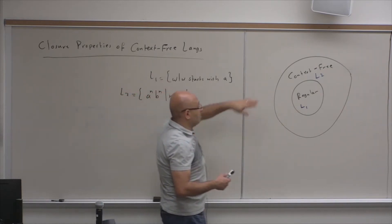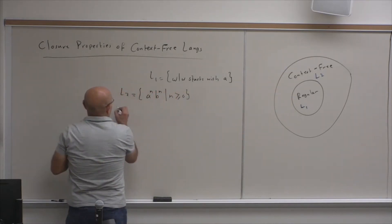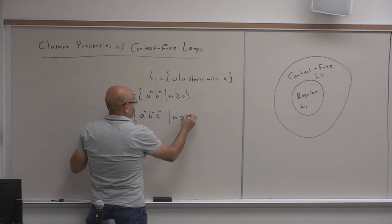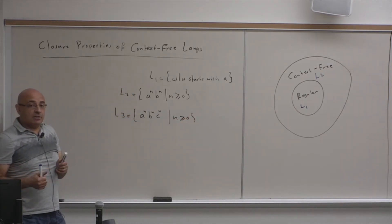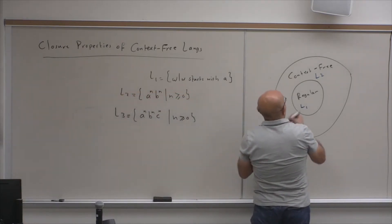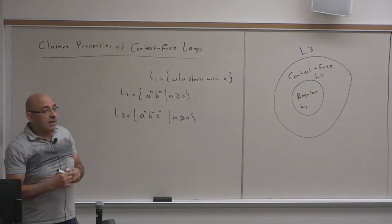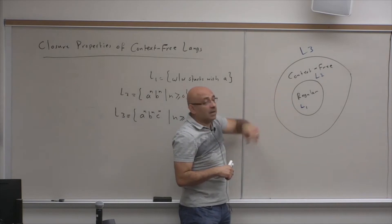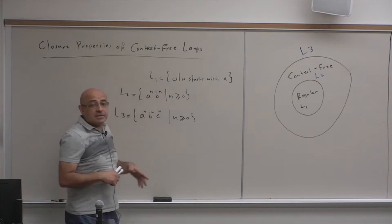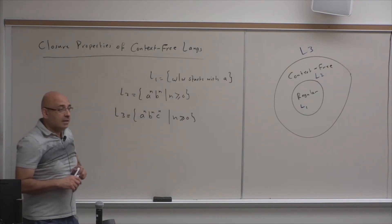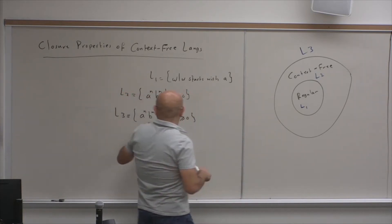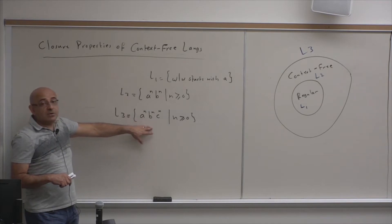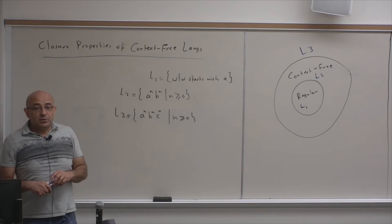Is there a language that cannot be represented using context-free grammars? Yes. There are languages like L3 = {A^N B^N C^N | N ≥ 0} that cannot be represented even using a context-free grammar. L3 is outside the context-free languages. Later on, we will learn a larger set of formal languages that contains context-free languages. There is also a pumping lemma for context-free languages that you can use to prove a certain language is not context-free. But I'm not going to do the pumping lemma at this point — I'm going to convince you intuitively that you cannot generate this using context-free grammars.